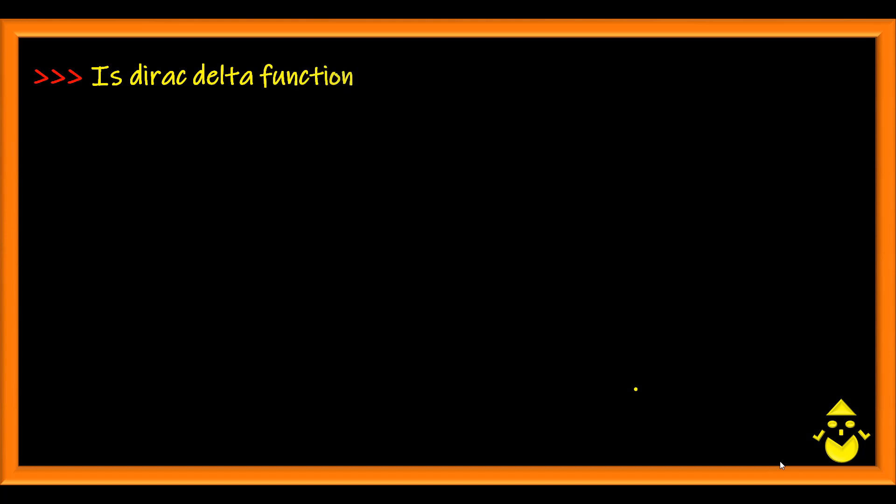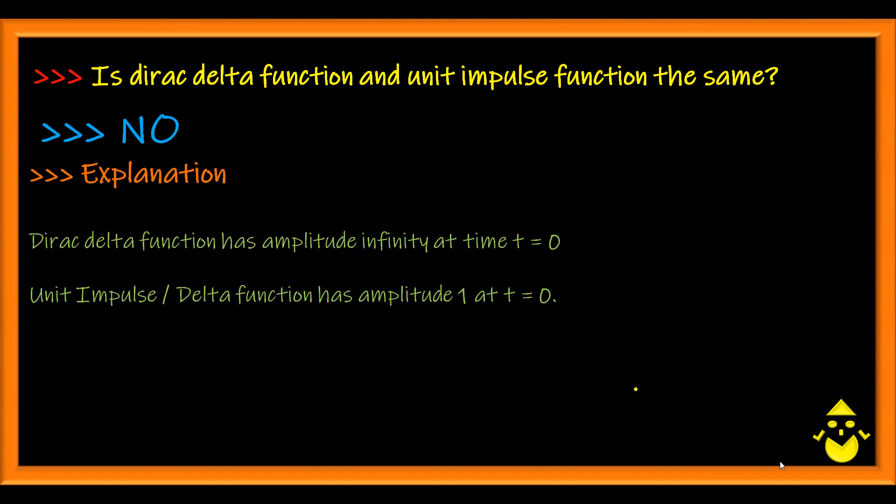Is Dirac delta function and unit impulse function the same? The answer is no. A Dirac delta function has amplitude infinity and time t equal to 0, whereas a unit impulse or a delta function has amplitude 1 at t equal to 0.